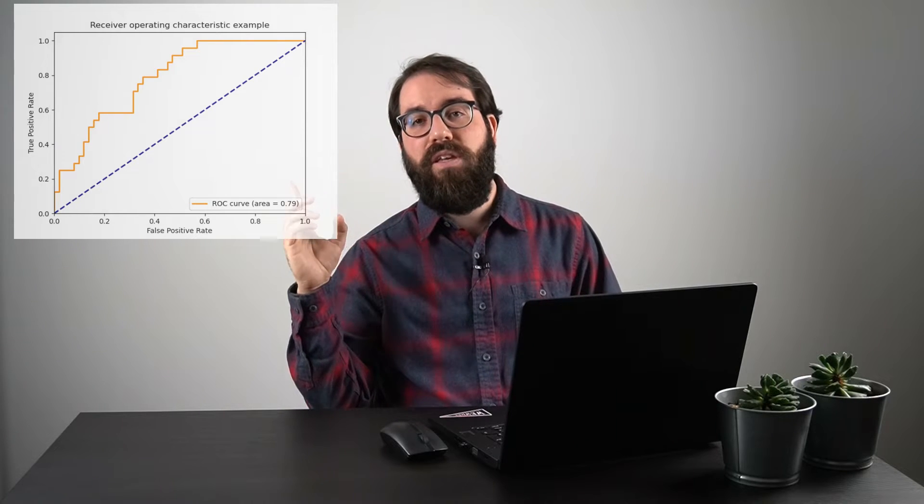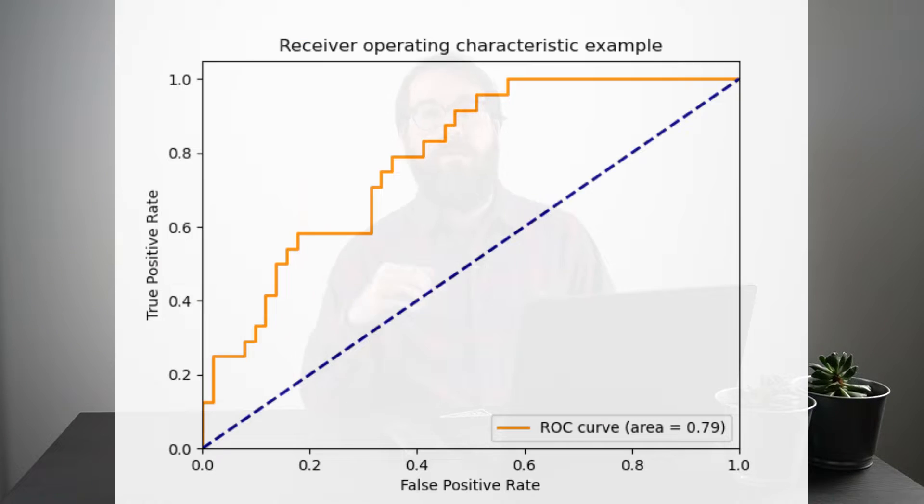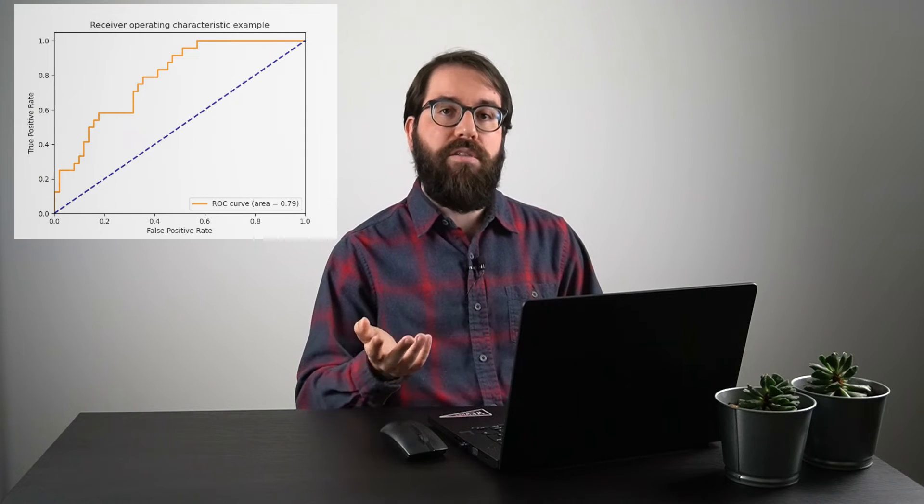I'm showing the ROC curve here — I will explain later what it means — and it's all about comparing the overall performance of the model with a random guess. Imagine that you have a model that classifies between class A and B, dogs and cats; you want to know if it's better than just tossing a coin to decide it. This is what the AUC, the area under the curve, will tell you.